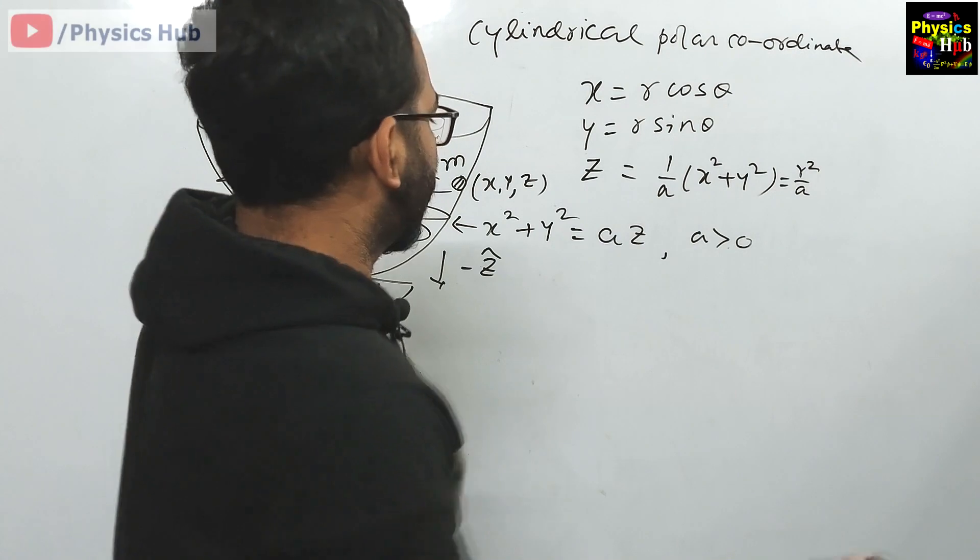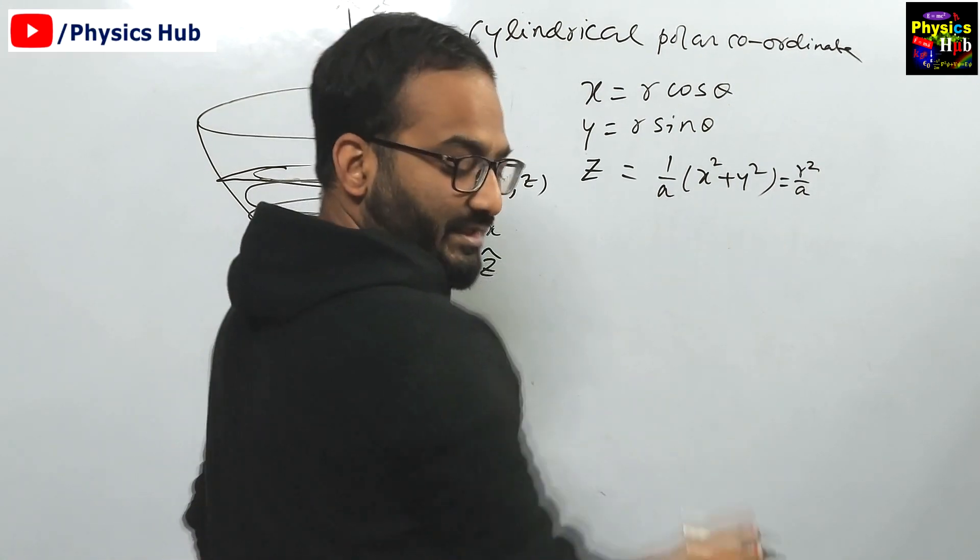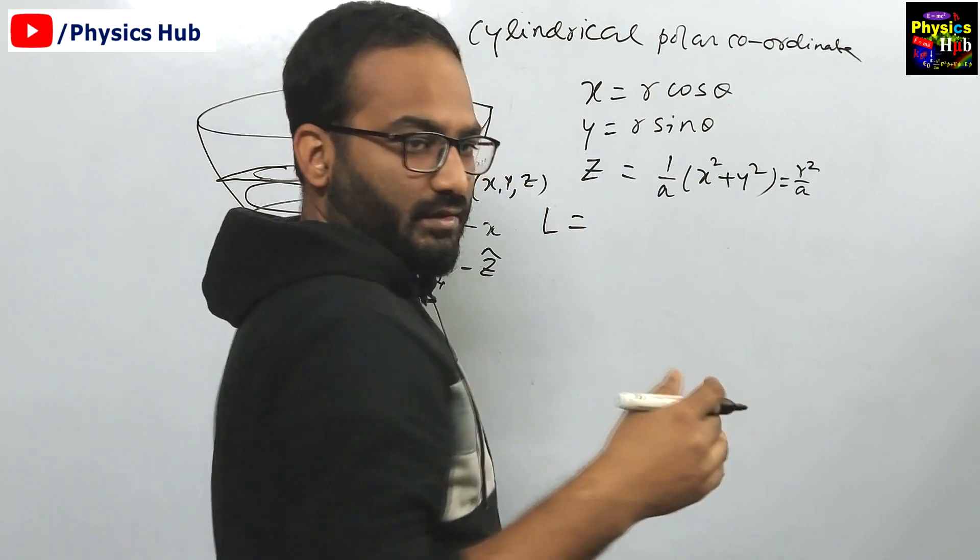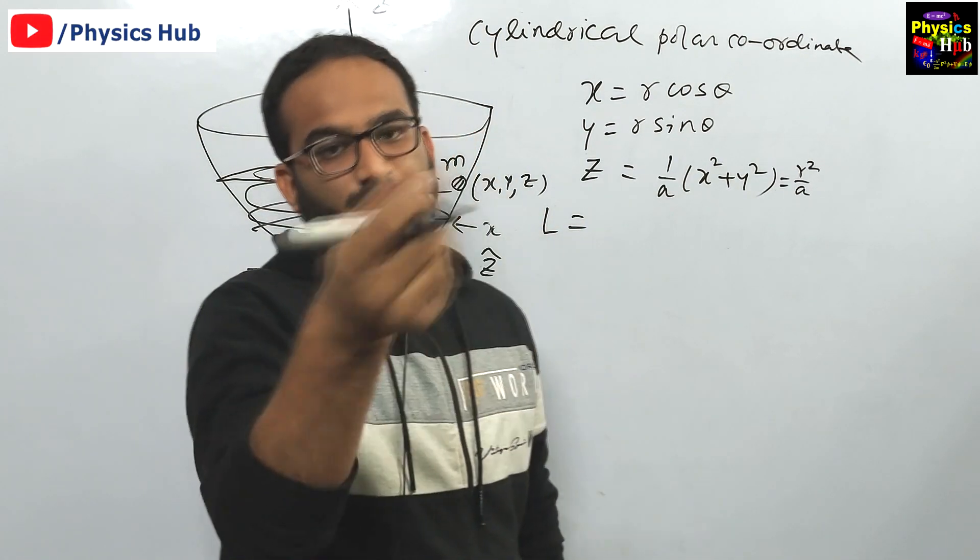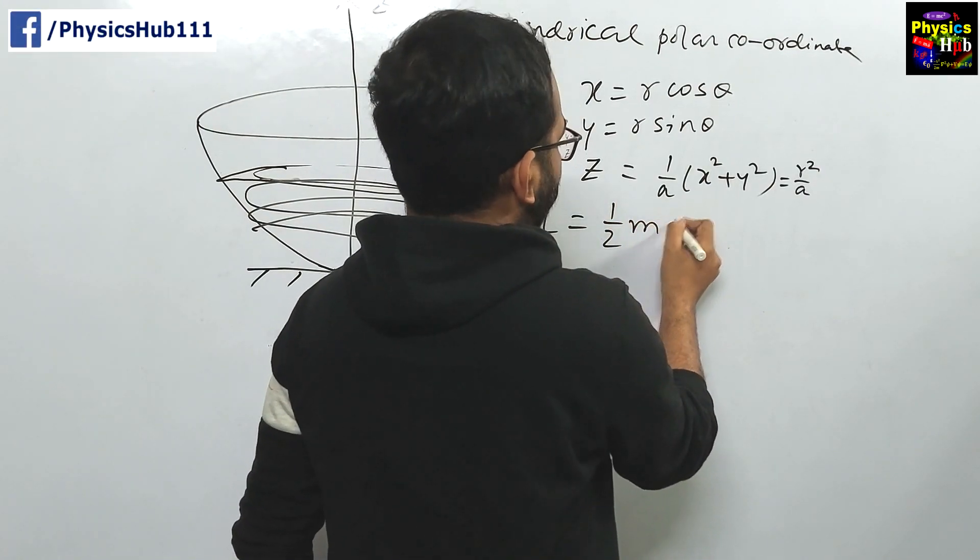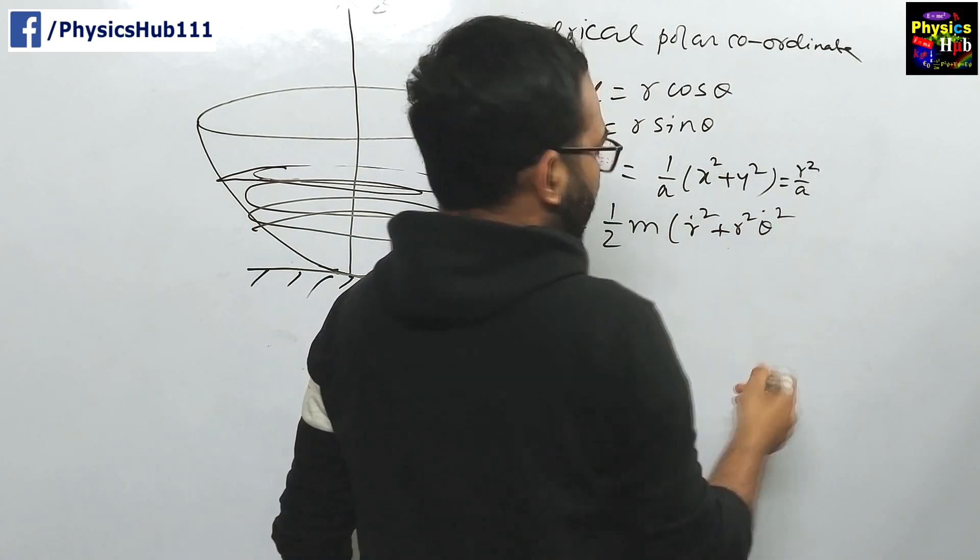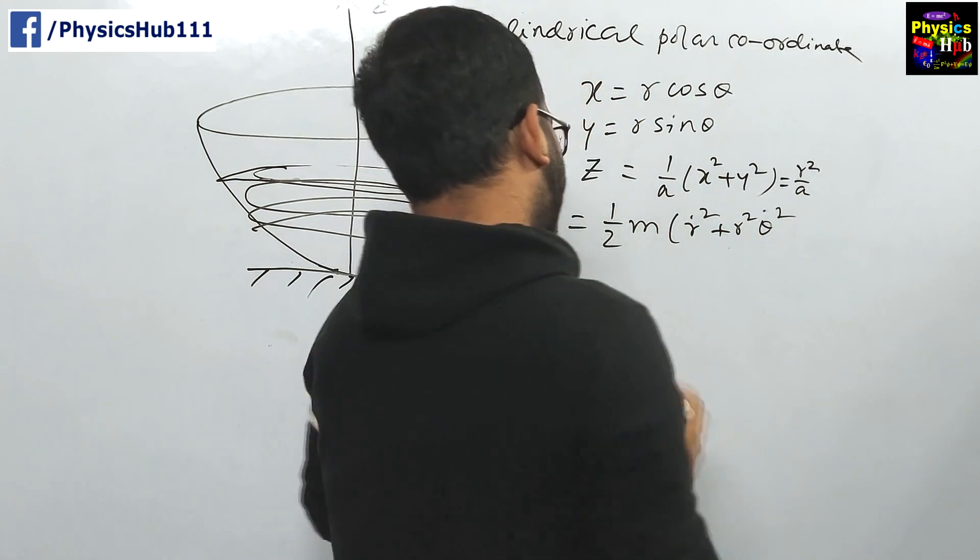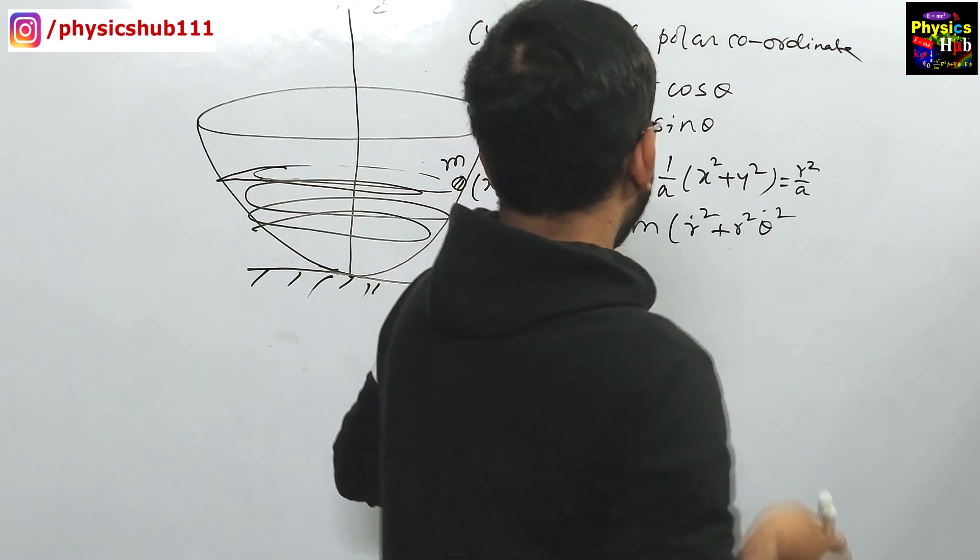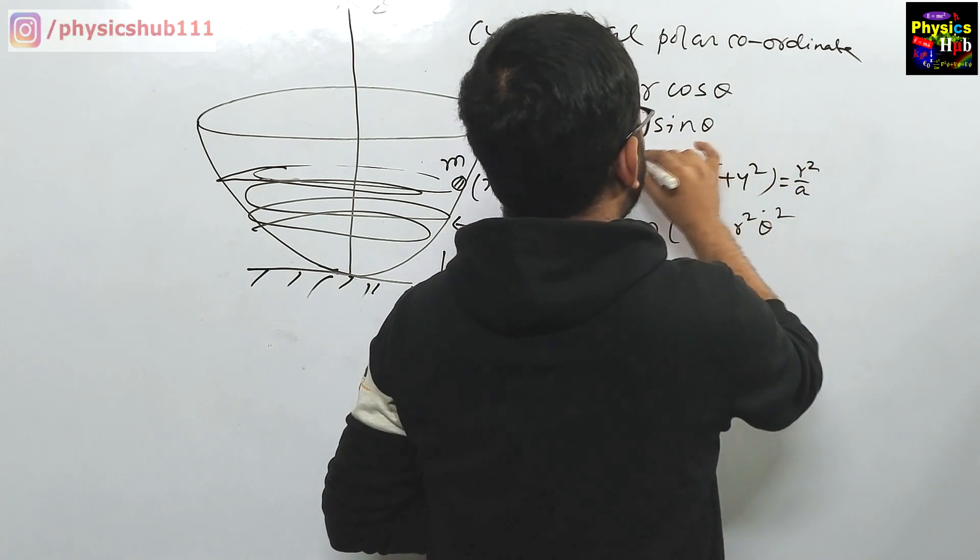Once this is found out, we can calculate the Lagrangian of the system. Lagrangian is the difference between kinetic energy and potential energy. What is the kinetic energy in cylindrical polar coordinate? Half m into r dot square plus r square theta dot square plus z dot square. What is the value of z dot square?